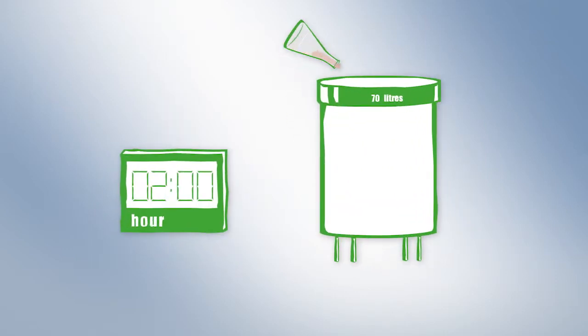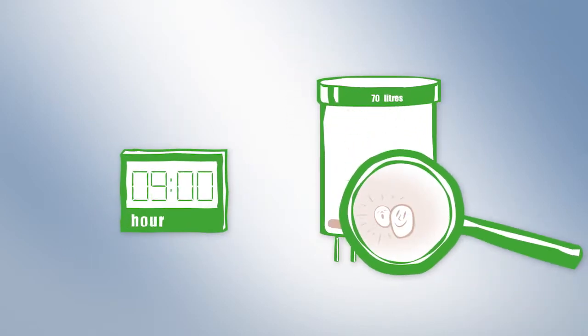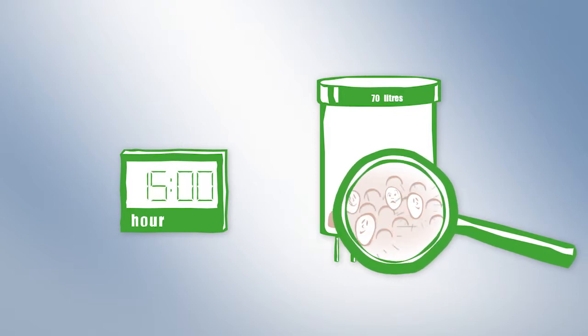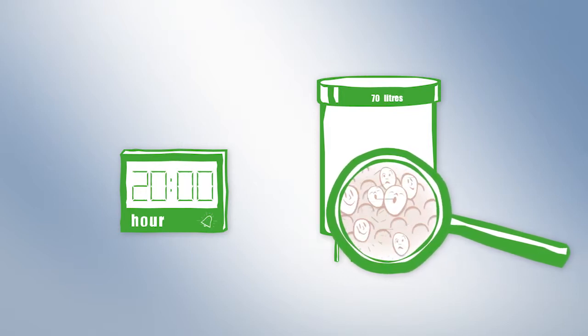Then the three-step fermentation process begins. The preparatory culture from the laboratory is put into the first fermenter. The yeast cells multiply rapidly.